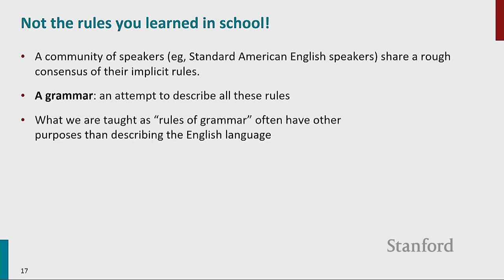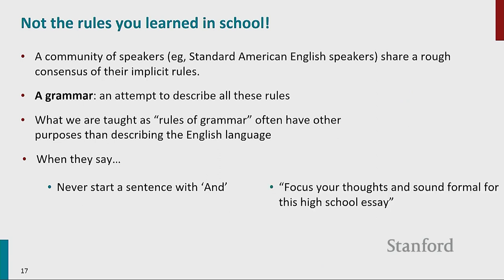The prescriptive rules we're taught in school often have other purposes than describing the English language. For example, 'never start a sentence with and' — that's not actually true; we start sentences with 'and' all the time. The reason they probably say this is they don't want high schoolers writing 'oh and this, oh and this again' — they want focused writing. And when they say it's incorrect to say 'I don't want nothing,' well, in standard American English you'd use 'anything,' but in many dialects of English and many languages across the world, when you have a negation, everything it scopes over also has to be negated. What they're really telling you is the dialect with the most power in the United States doesn't do negation this way.